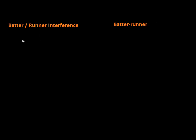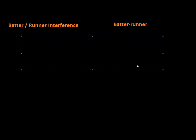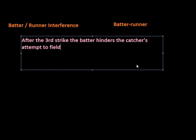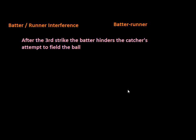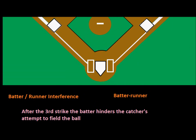The first example is that after a third strike, if the batter hinders the catcher in his attempt to field the ball. There are situations where if the catcher drops the third strike, the batter can run. On his way toward first base, the batter might kick the ball, hit it with the bat, or interfere with the catcher directly — and he could be called out for interference.